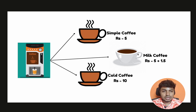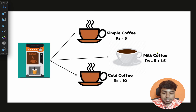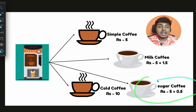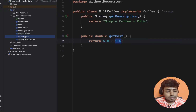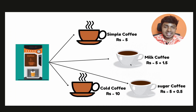Everything again looks good. But in case you want to add extra features — for example, you introduce sugar. The coffee cost plus 0.5 rupees for sugar. How do we implement this? We create a sugar coffee class with extra 0.5 rupees as discussed. So now everything looks good — no problem so far.